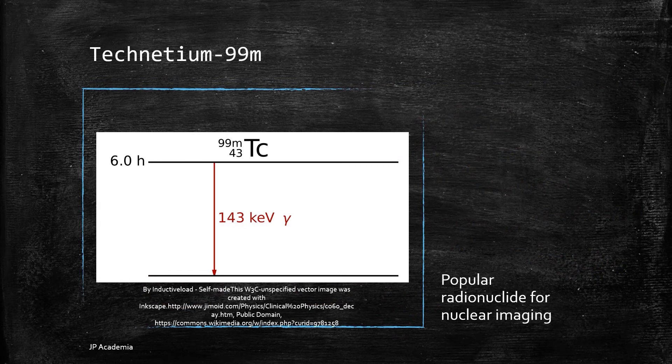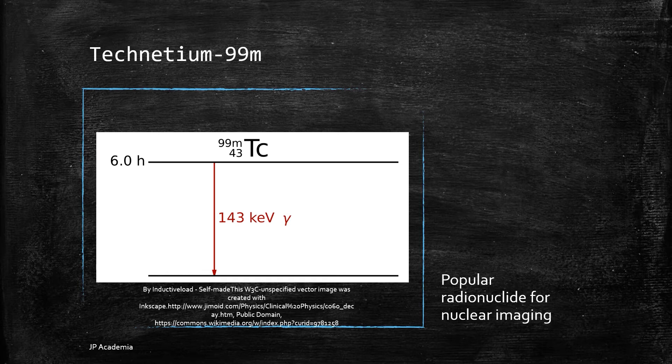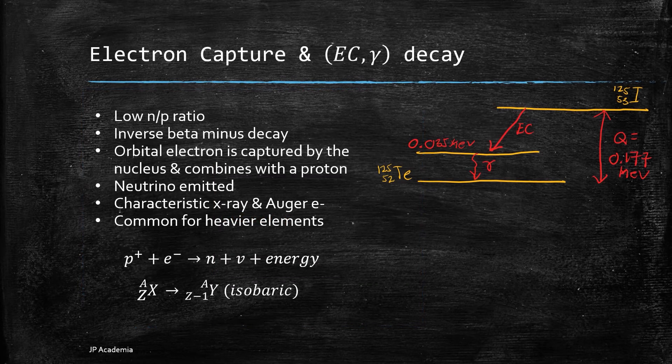Technetium-99m is one of the most popular radionuclides for nuclear imaging studies. Shown here is the decay scheme diagram of this metastable nuclide, wherein it releases this gamma ray with the energy of about 140 kilo electron volts.